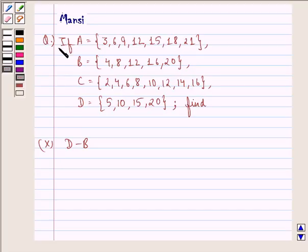The question is: if A equals the set {3, 6, 9, 12, 15, 18, 21},